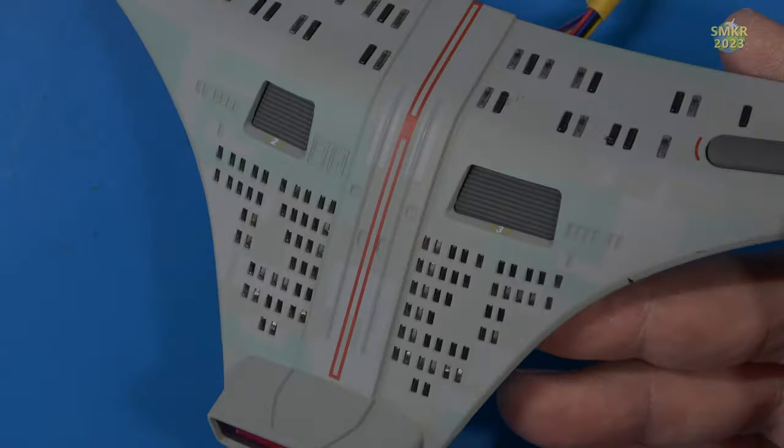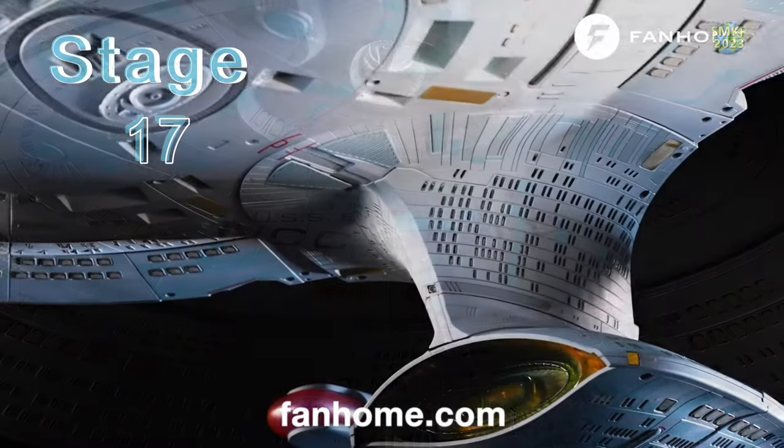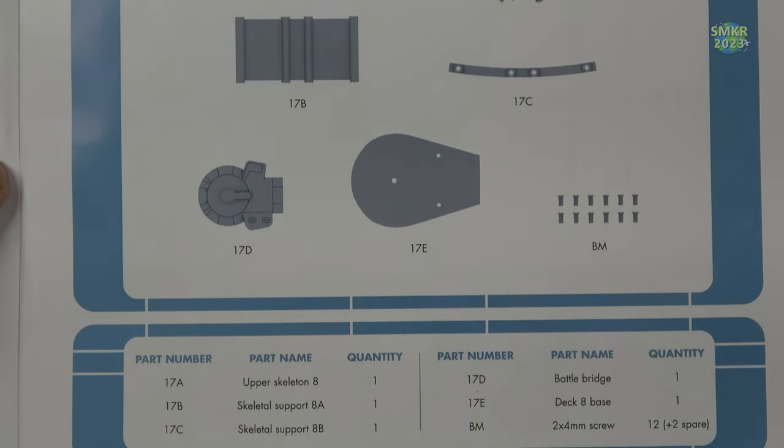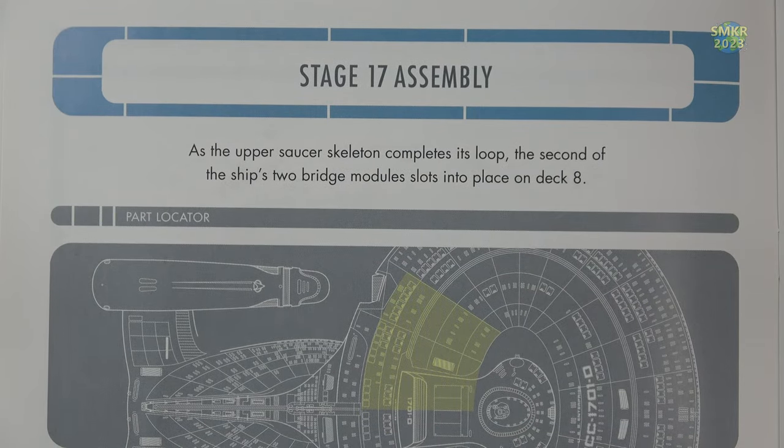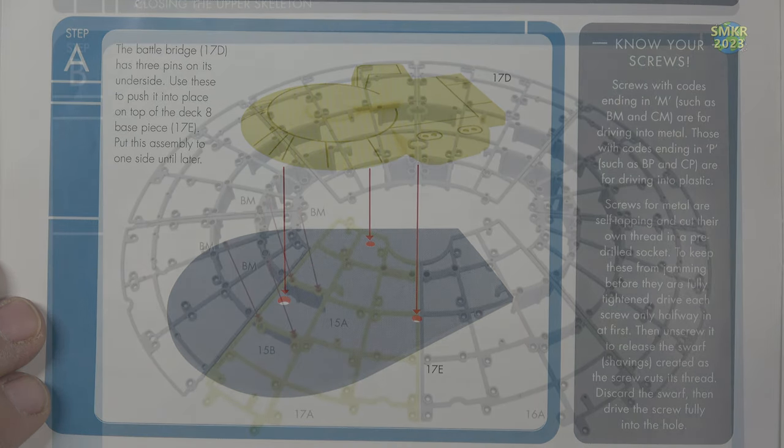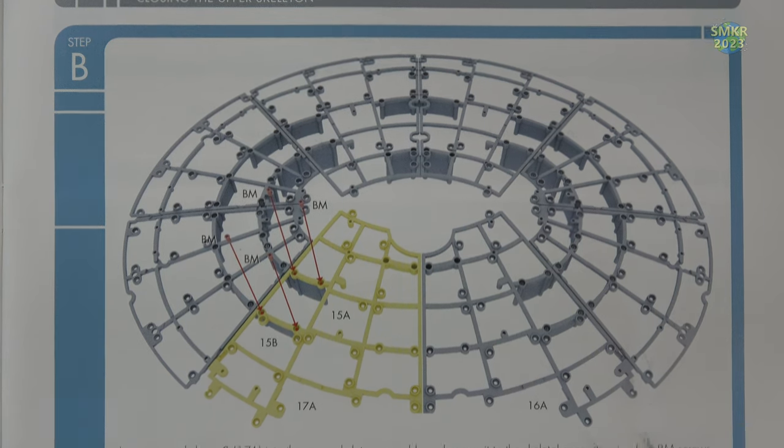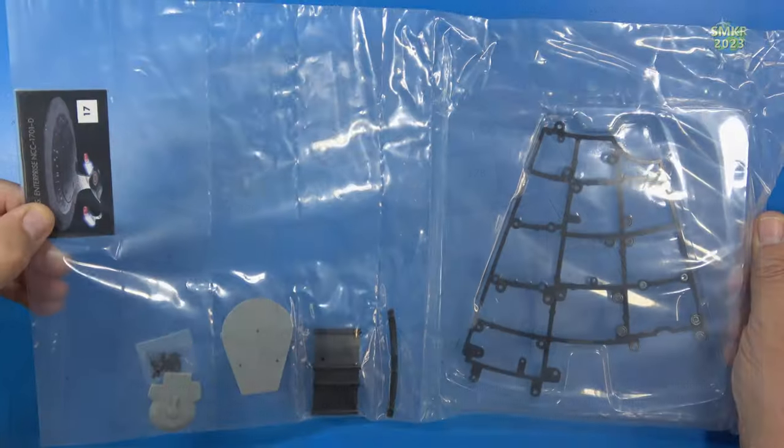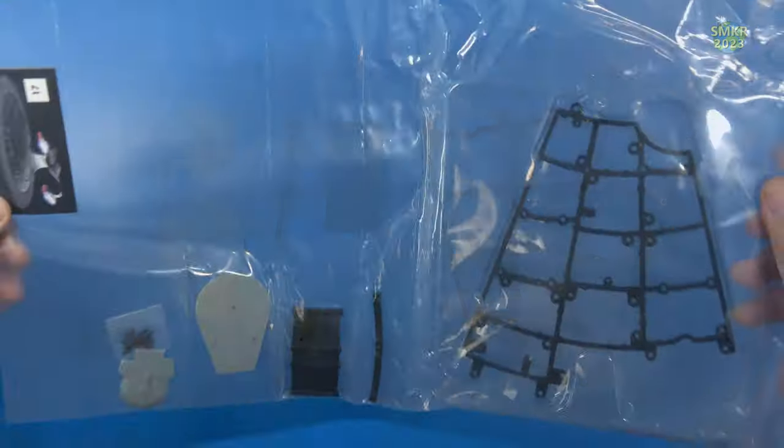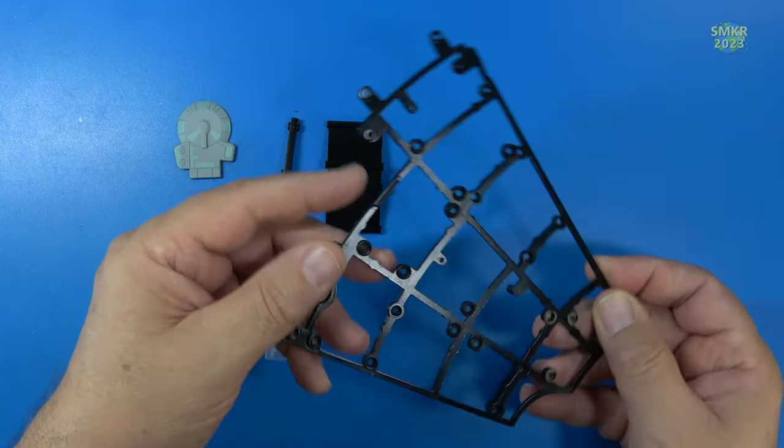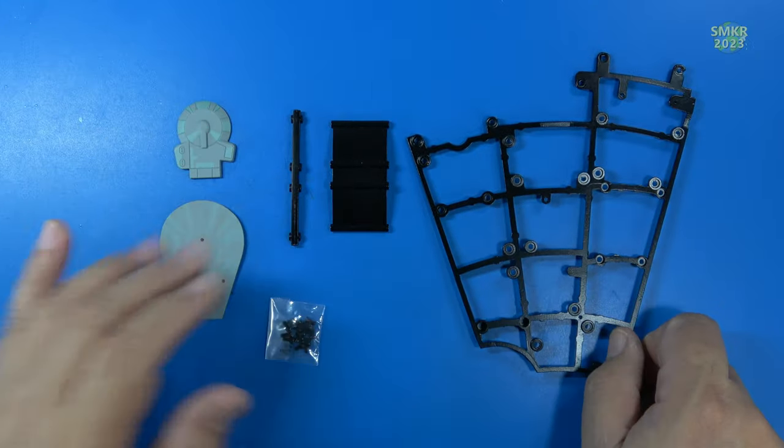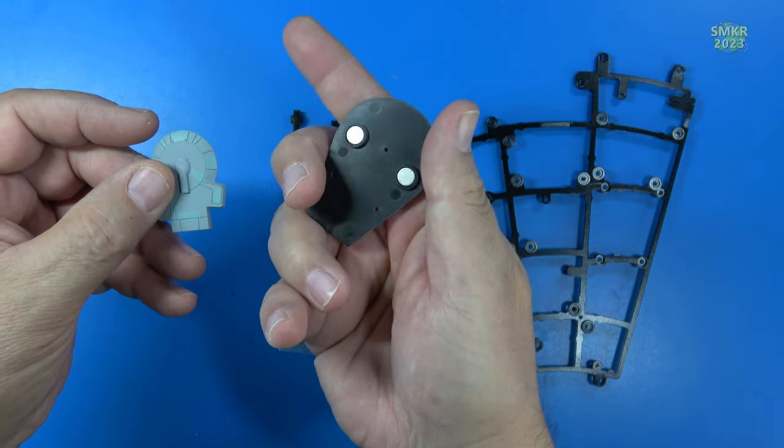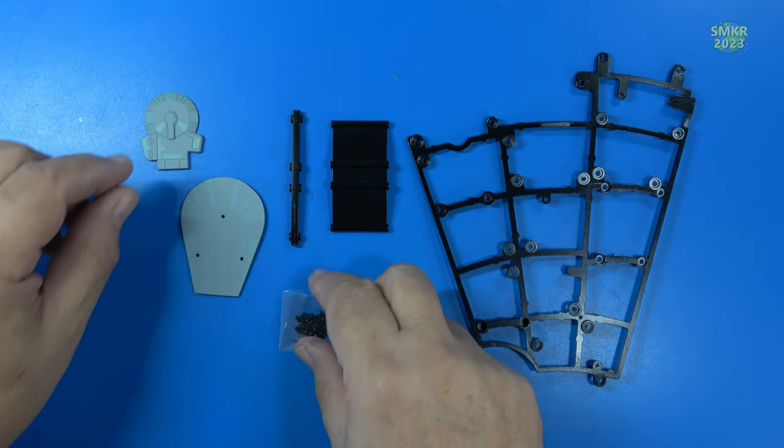Here's parts for stage 17. More upper skeletal frames, some supports, and the battle bridge. The assembly for stage 17. We'll start on the battle bridge here first and install our last portion of the upper skeletal frame. Looks like we have a couple small supports for that. Let's look at the parts. Here are those parts. This is the last section of our upper skeletal frames. A couple of supports for that. The battle bridge, which is very cool there. Very nicely painted and detailed. And you can see it is magnetized. Very cool. And BM screws.